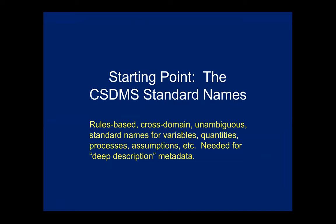But there were a number of problems with CF standard names. One was they didn't want to expand as broadly as we needed — they wanted to stay with ocean and atmosphere variables. Also the rules were not really rules; they were guidelines and there were a lot of inconsistencies. We realized they hadn't thought this through as carefully as we would have liked, which prompted me to start on the path of doing something better, informed by what they and other groups had done.